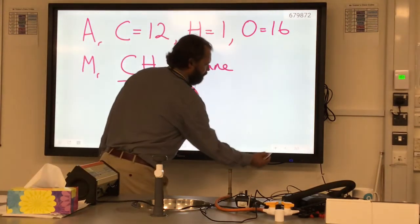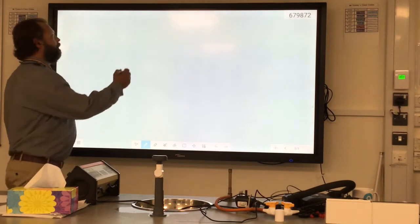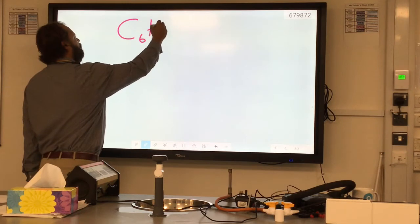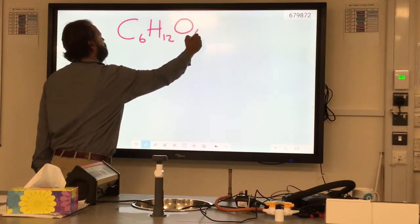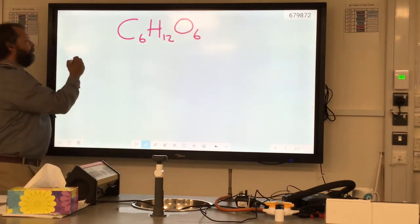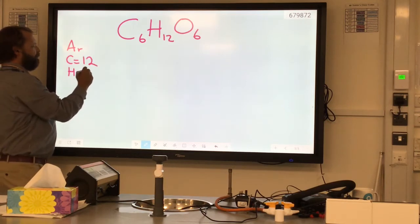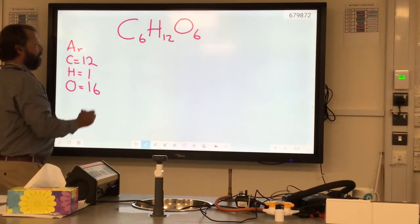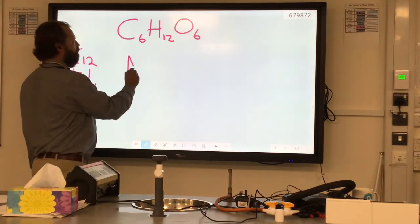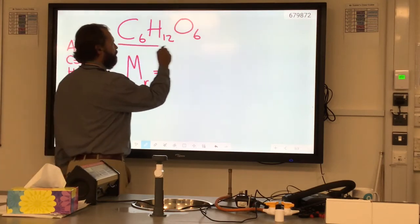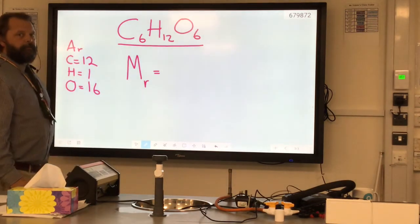Now, if I write another formula on here, let's say C6H12O6, which is the formula for glucose, a sugar. And we know that carbon atoms weigh 12, and hydrogen atoms weigh 1, and oxygen weighs 16. Can you work out the relative molecular mass of this molecule here, glucose? Have a go.